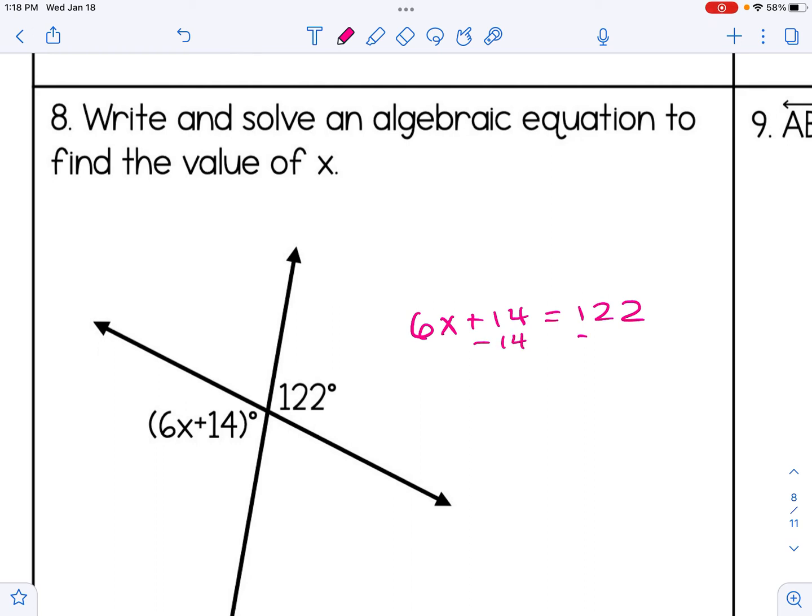Now we're just going to use our algebra skills to isolate the variable. I get 6X equals 108 after I move 14 to the other side. Divide by 6, and I get X is equal to 18. This problem only asks us to solve for X. It doesn't ask us to check, but remember you can always check an algebra problem. If I plug 18 back in for X over here, I will in fact get 122 degrees, so I know that checks out.